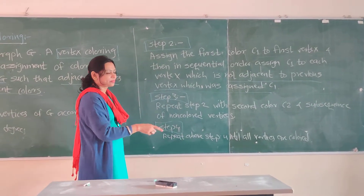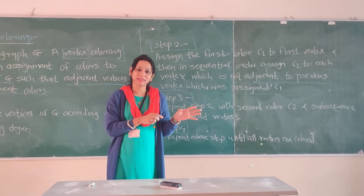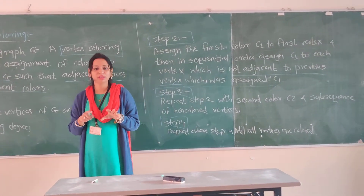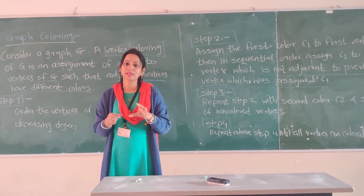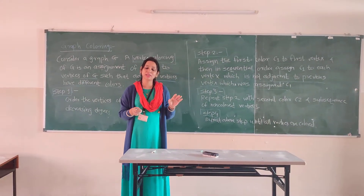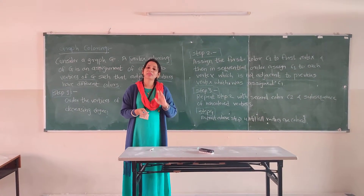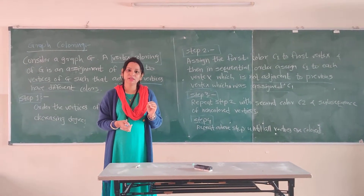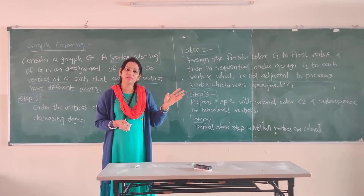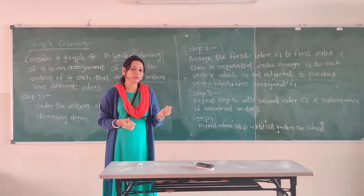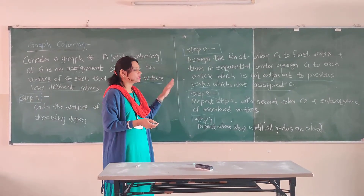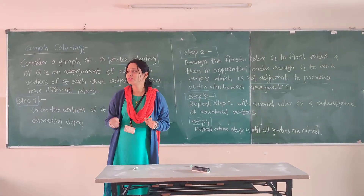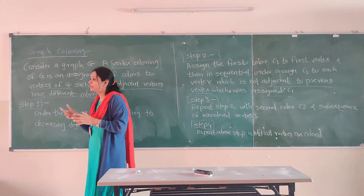That is Step 4: when all the vertices are colored, then we stop. So this is how we do graph coloring — we first arrange all the vertices with decreasing degrees, then start with the first vertex and apply the first color, then color vertices which are not adjacent to the previous vertex, repeating this process till all vertices are colored.